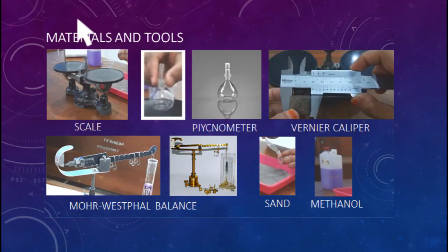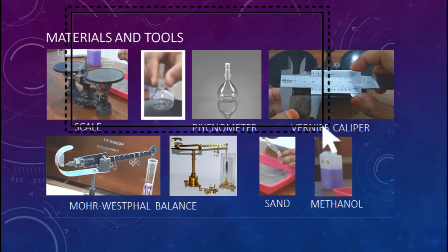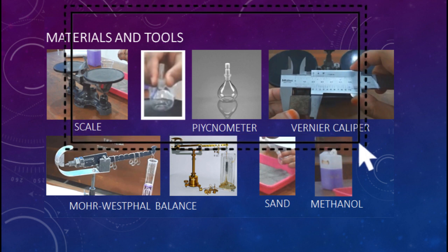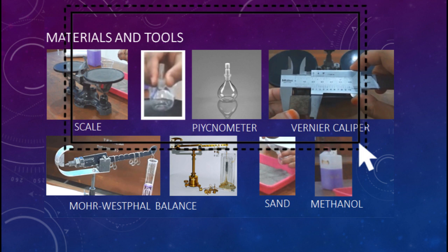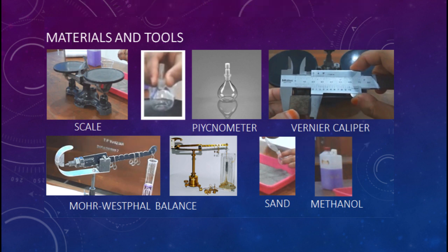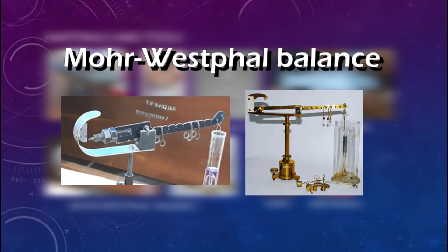From the first, second, and third scales, pycnometers and vernier caliper are going to be used for the determination of the density for solid, which is wooden block as well as sand. For the bottom left corner here, Mohr-Westphal balance.